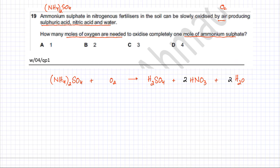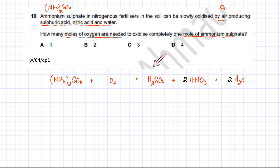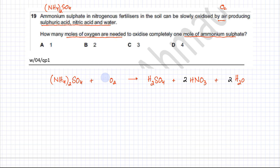Now balance oxygen: there are 4 oxygens in sulfuric acid, 6 in the 2 nitric acid molecules, and 2 in the 2 water molecules — that's a total of 12 oxygens in the products. Ammonium sulfate already contributes 4 oxygens, so we need 8 more oxygens from O2, which means 4 O2 molecules. Therefore, option D — 4 moles of O2 — is the correct answer.